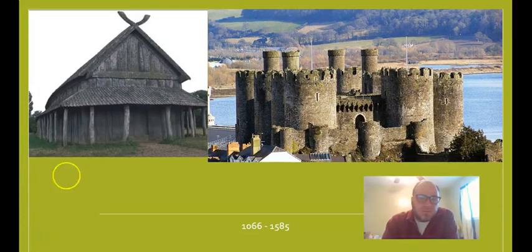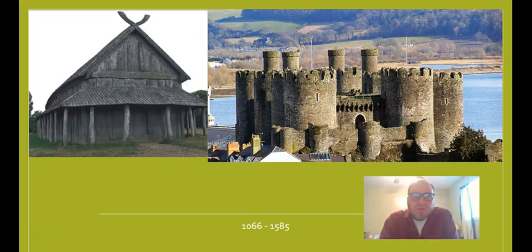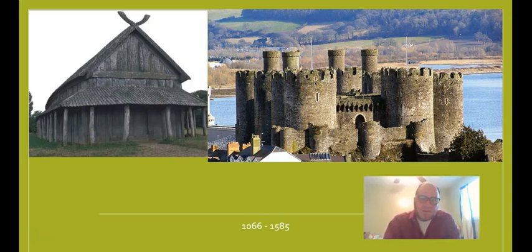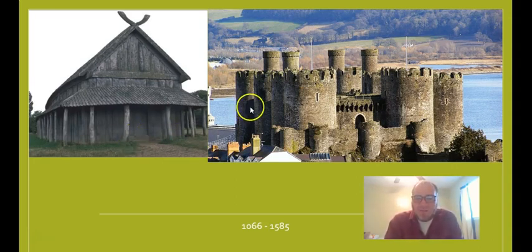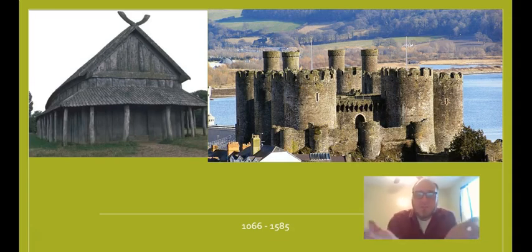If you recall, the Anglo-Saxons used to live in buildings called Mead Halls — you've got an image of one right here. That was the early Anglo-Saxon period. By the late Anglo-Saxon period, they were building more permanent structures out of stone, but nothing like the high European castle building that came with William the Conqueror. By the end of the English Middle Ages, they were building castles like this one — a Welsh castle. You can see the distinct difference in building capability.